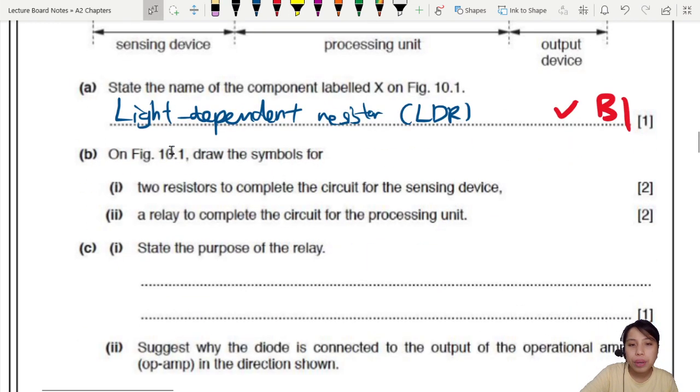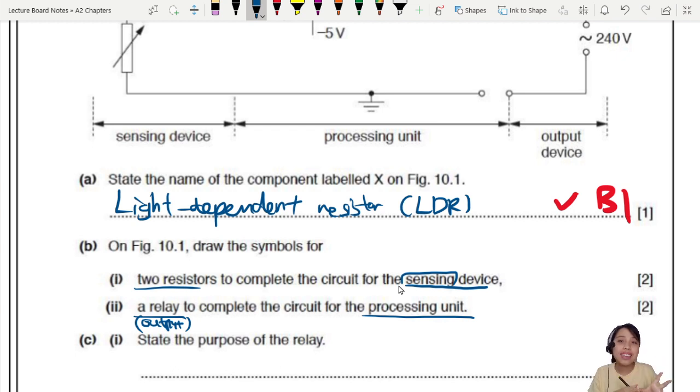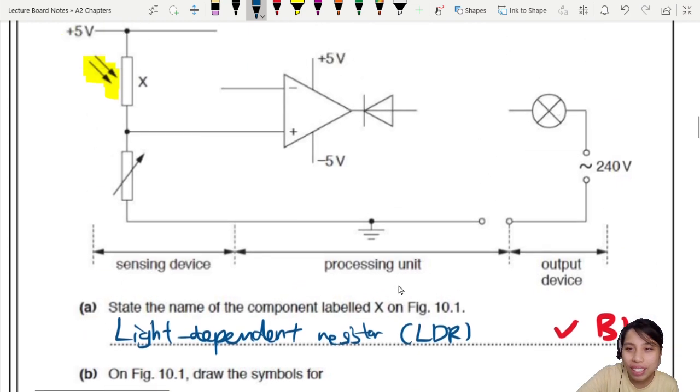On figure 10.1, draw the symbols for two resistors to complete the sensing part. So you want to draw two resistors for the sensing device and a relay for the processing unit. So you're basically drawing the sensing and you're drawing the output. Relay is talking about the output. Let's go and see what we can do here.